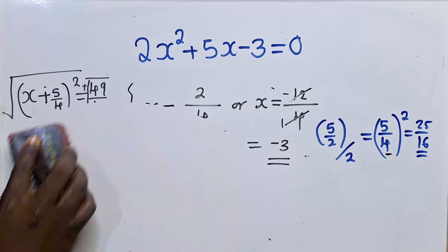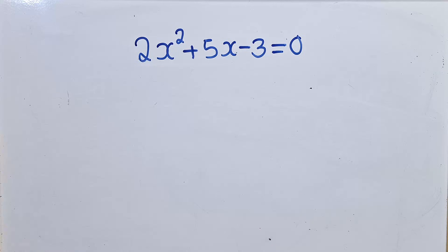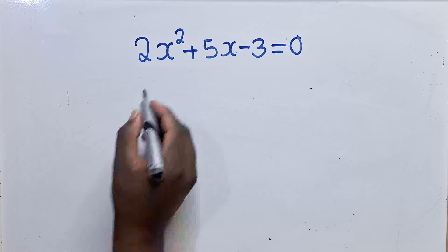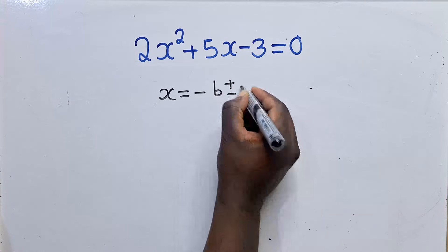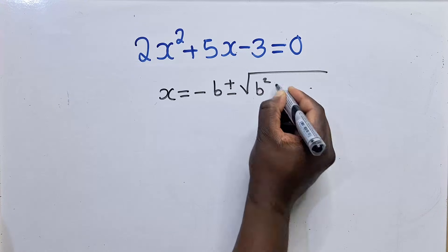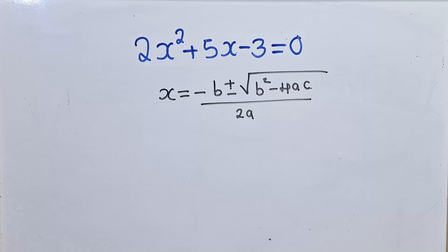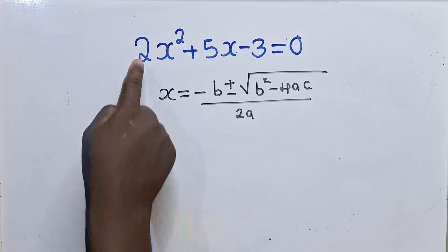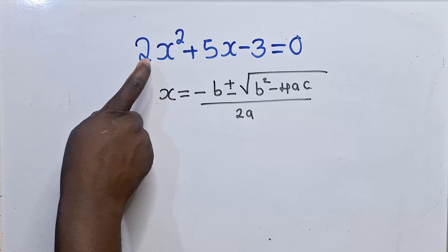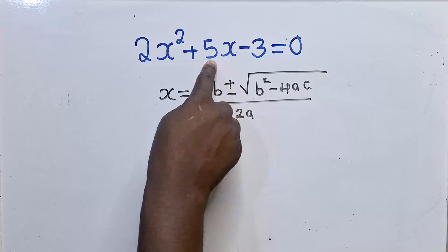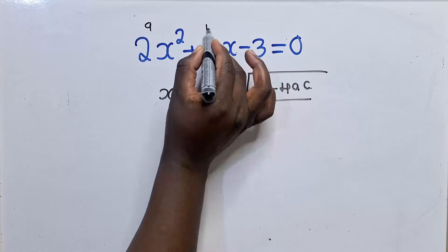Let's use method 2: the quadratic formula. Remember we are going to use three methods to answer this question. For the quadratic formula, x = (-b ± √(b² - 4ac)) / 2a. Here our a is the number in front of the x² term, which is 2; our b is 5; and our c is -3. So let me indicate: this is a, b, and c.